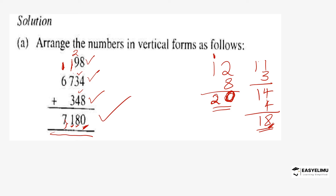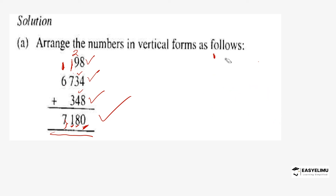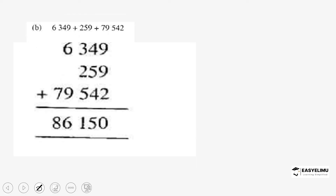Now let's look at another example applying the same concept of addition of numbers. In this example we have 6,349 plus 259 plus 79,542. Again, 9 here is in the 1's place value, so all the digits in the 1's place value in the other numbers must be written along the same line.